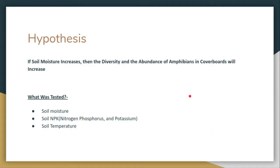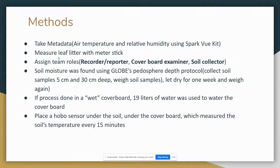Our hypothesis for this project was: when soil moisture increases, so will the diversity and abundance of amphibians. We supported this hypothesis because amphibians have gills and would rather be in moist habitats rather than dry habitats.